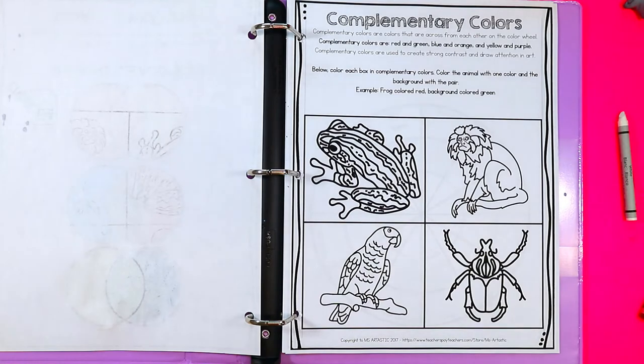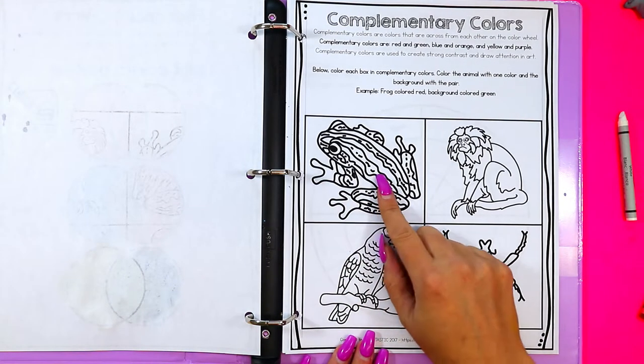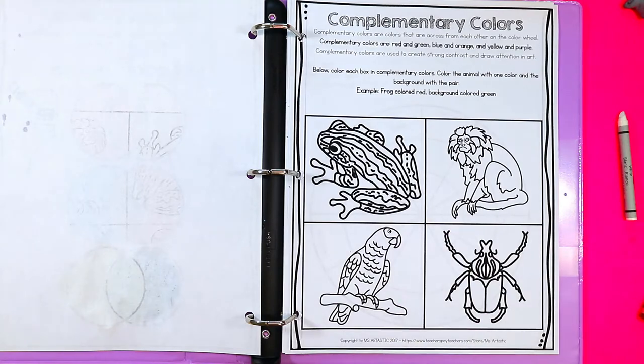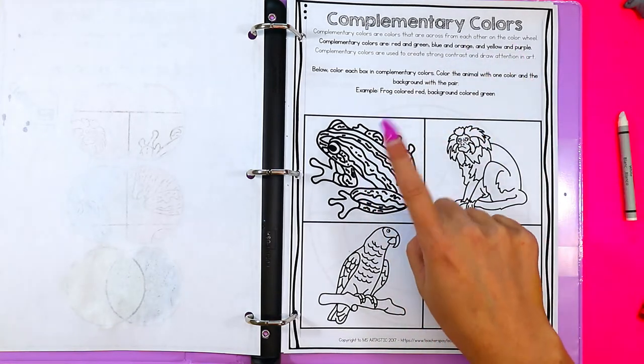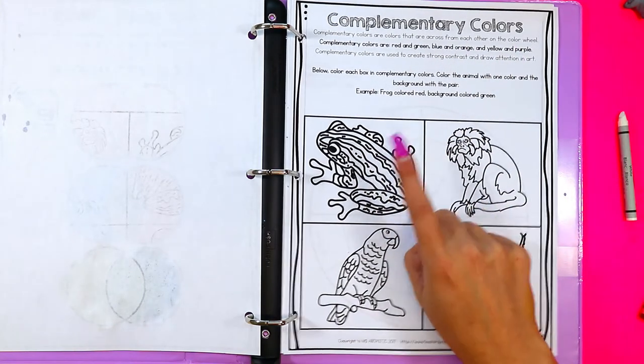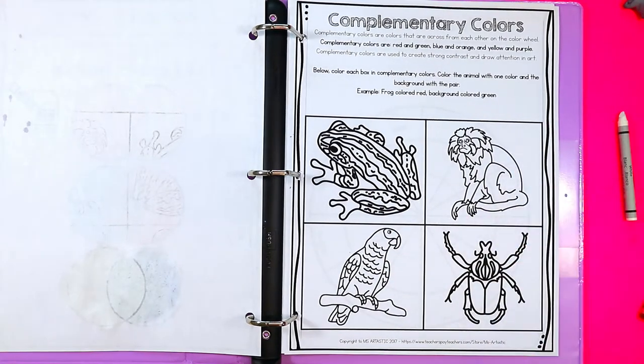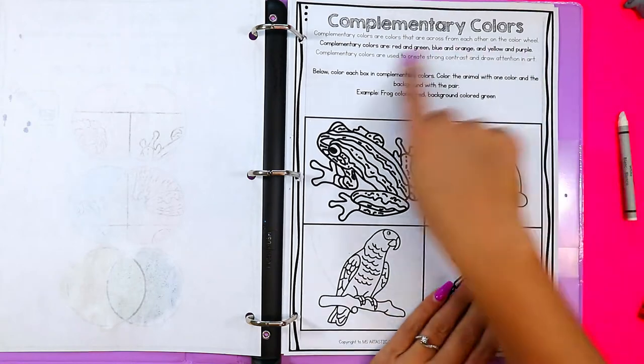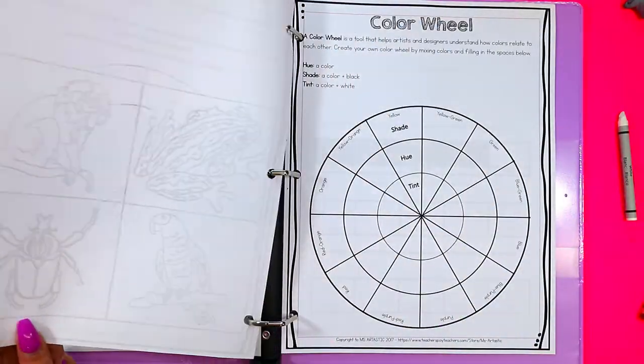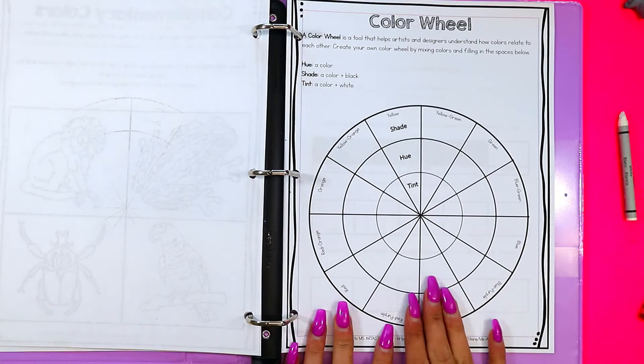You can also teach about complementary colors in this resource. So you can be coloring each of these animals with complementary colors. The frog could be red and green—one color for the background, one color for the animal, then blue and orange, and so on. It talks about what complementary colors are, and then you can color the animals with them.